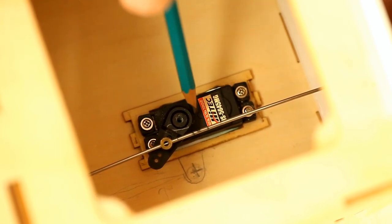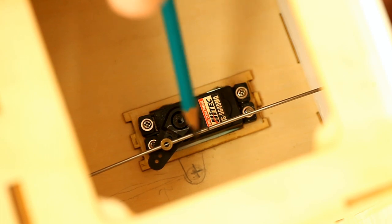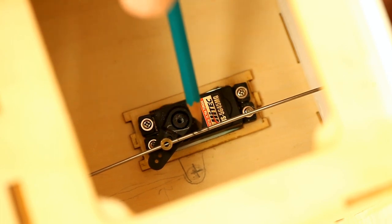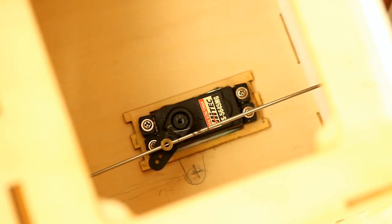Now all we're going to do is put a slight notch in this rod so that when we tighten down the screw, it catches in that notch and doesn't go anywhere.